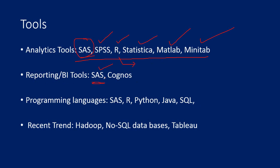Other tools used for reporting are IBM Cognos and even SPSS. So these are some of the softwares used for reporting and BI.